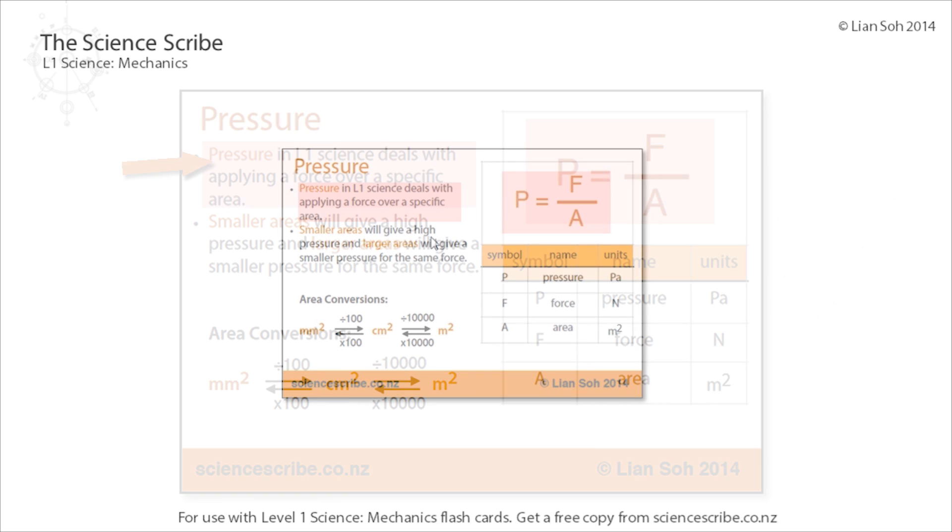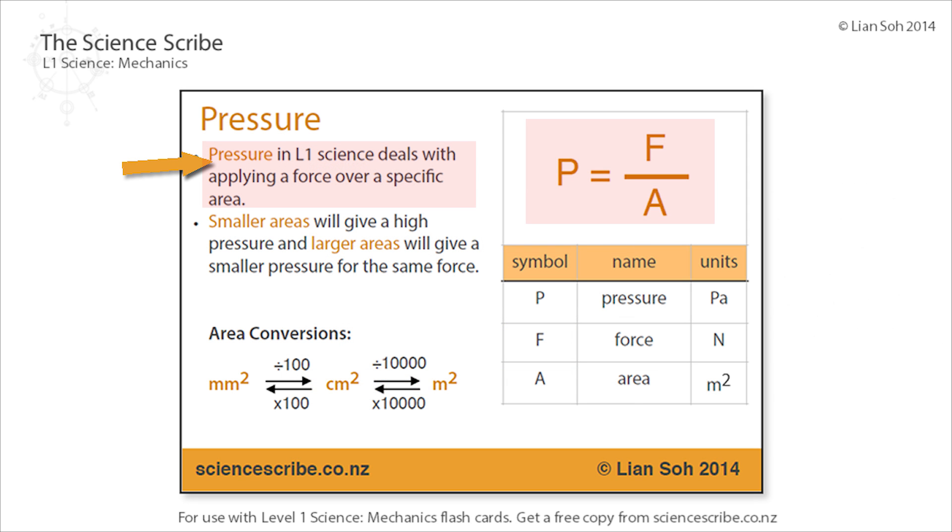In Level One pressure we're going to be dealing with applying a force over a certain area. Be aware of the symbols: we've got capital P which is for pressure, not power, and the units for pressure is in pascals (capital Pa). We've got F for applying a force, so that's going to be newtons, and A for area, which is going to be in meters squared.